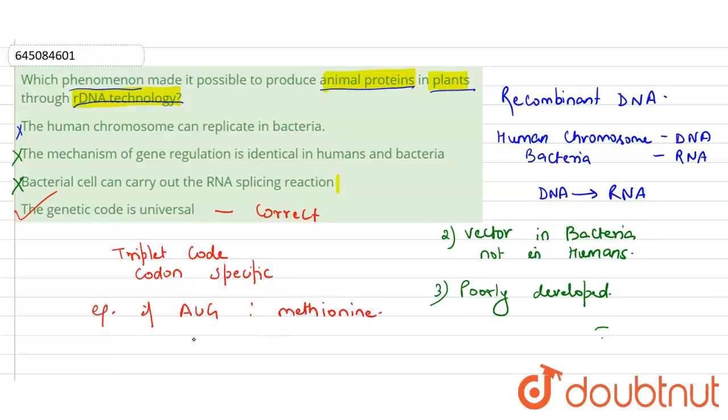Then this AUG is same, also codes for the bacteria as methionine. So the correct answer is option 4.